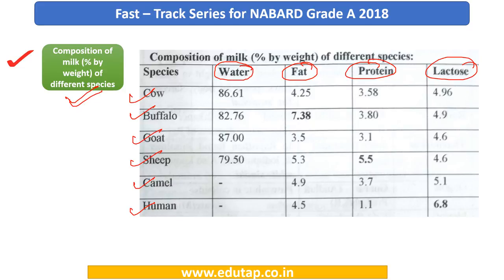It is not required for you to learn each and every percentage. For example, when you talk about fat, you need to remember that buffalo's milk has the greatest percentage of fat compared to other species. When you talk about protein, it is going to be sheep. When you talk about lactose, human has the greatest percentage. Make sure you know the least and the greatest, and keep the comparisons in mind.